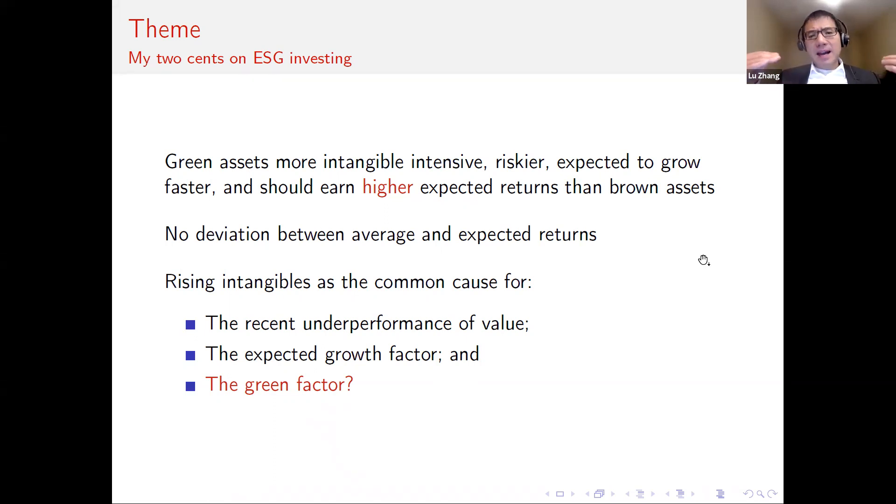With that said, my perspective is that the green assets are more intangible intensive. Green assets are riskier. They are expected to grow faster and should earn higher expected returns than brown assets. In particular, if this causal mechanism is correct, then there's no need to invoke any deviation between average realized returns in the data and expected returns in equilibrium.